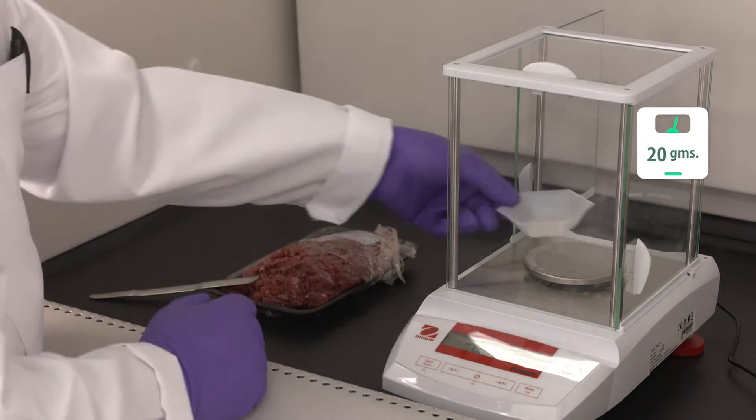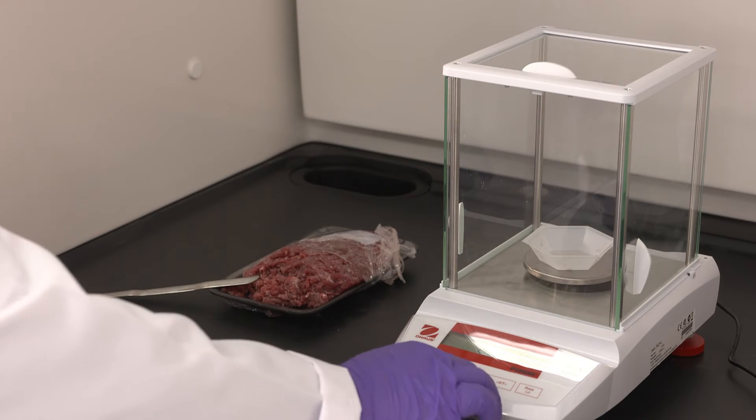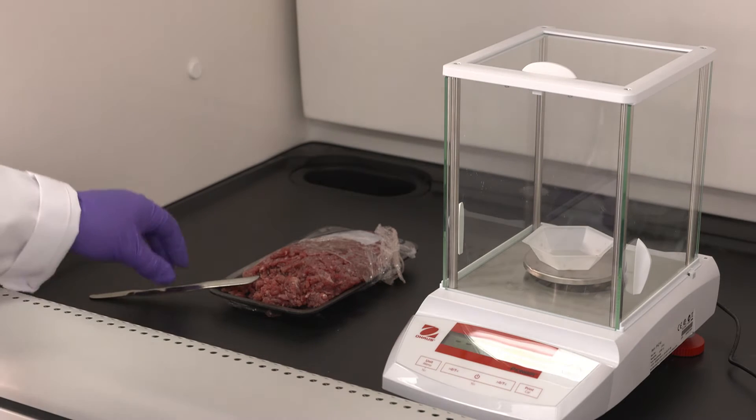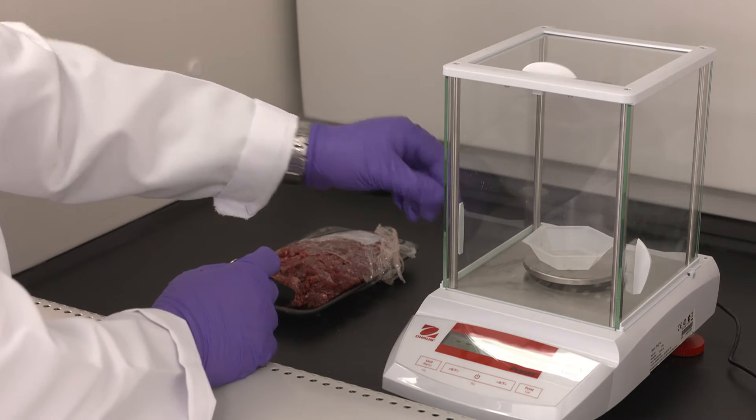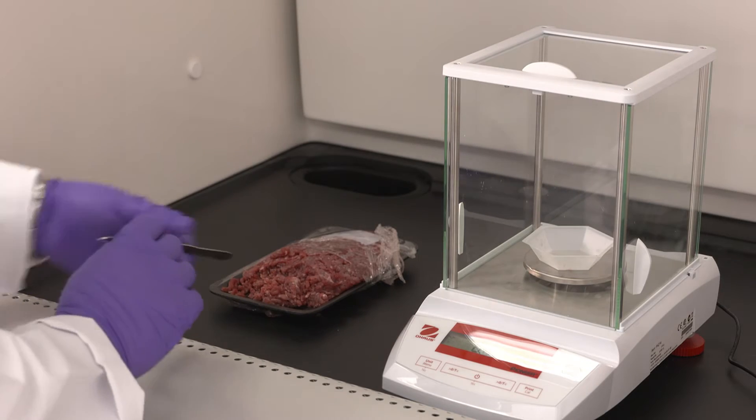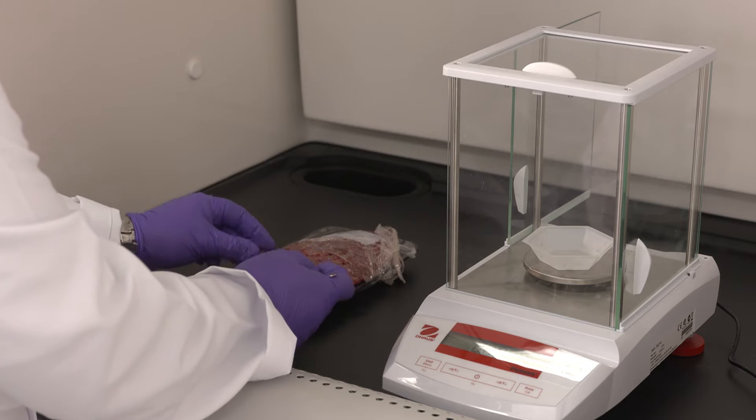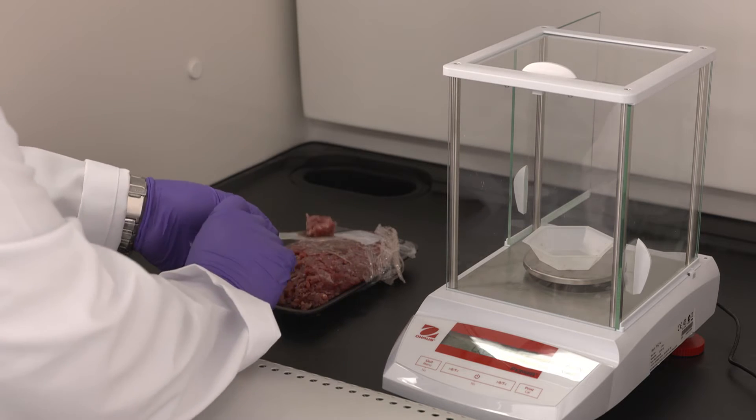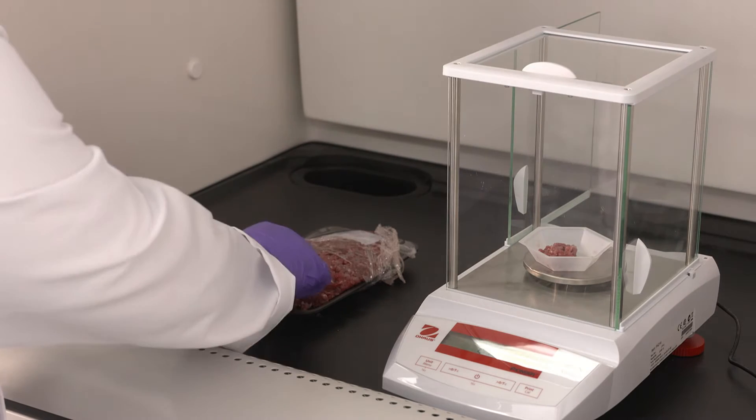We can scale up or scale down the amount we weigh. We can use as little as 2 grams or scale up to 200 grams as long as we keep the ratio between meat and the homogeneous liquid constant, which is a ratio of 1 to 5.